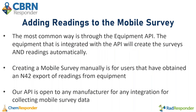Once you have a mobile survey created, you can now add readings to it. The most common way to add readings is through the equipment API. Equipment that is integrated with the API will create the surveys and readings automatically, making it much easier for the user. If you do not have integrated equipment, you will need to follow the steps to create the survey and then use the N42 export from the equipment to upload the readings. Our API is open to any manufacturer for any integration for collecting mobile survey data.